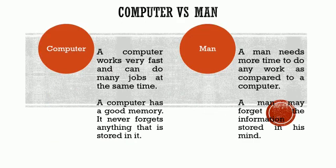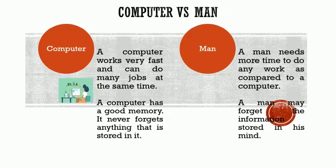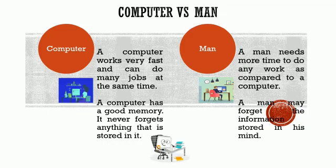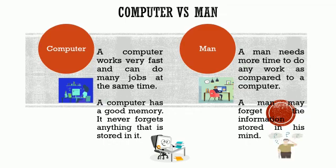Now let's see the difference between man and computer. First, a computer works very fast and can do many jobs at the same time, but a man needs more time compared to a computer. A computer also has a good memory — it never forgets anything that is stored in it.